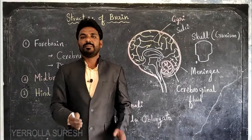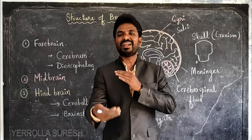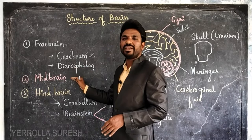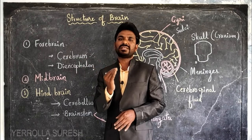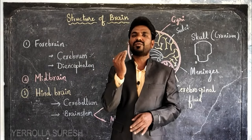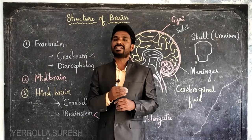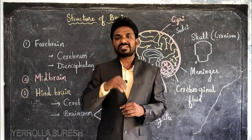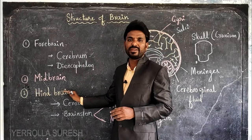The midbrain is the part of the brain that lies between the forebrain and hindbrain. It involves in the exchange of impulses or signals from the brain to the spinal cord and from the spinal cord to the brain. It also has some sensory centers for vision and hearing.